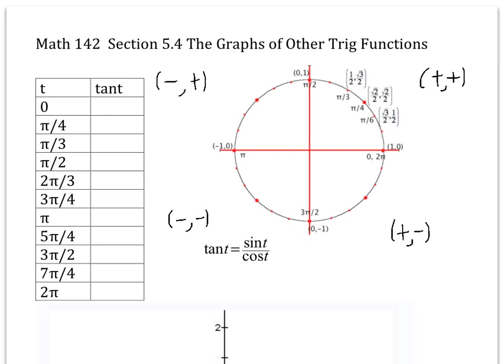In this section we're going to talk about graphs of the other trig functions besides sine and cosine. Let's start with tangent. Tangent is the ratio of the y-coordinate on the unit circle divided by the x-coordinate. That tells you that tangent is positive in the first quadrant, negative in the second, positive again in quadrant three, and negative in quadrant four. The period of the tangent function is pi, not two pi.